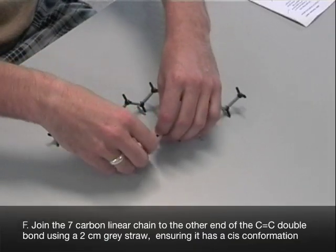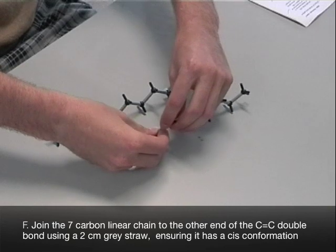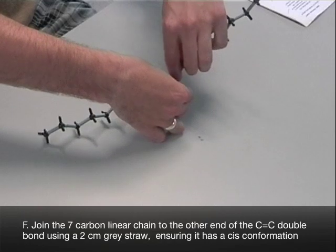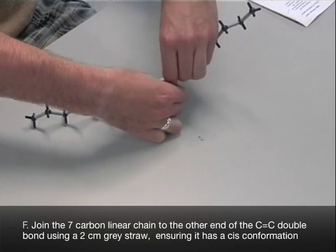Join the seven carbon linear chain to the other end of the carbon-carbon double bond from step C using a two centimeter grey straw. The seven carbon chain must be on the same face of the double bond as the eight carbon chain, so that is a U-shaped cis conformation.